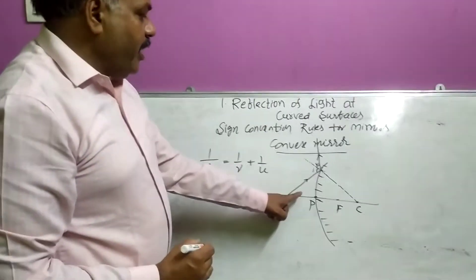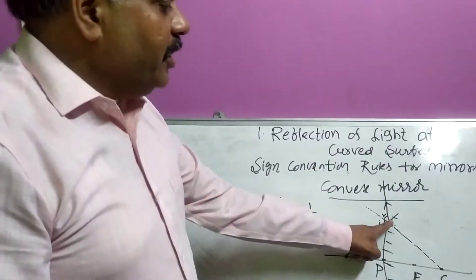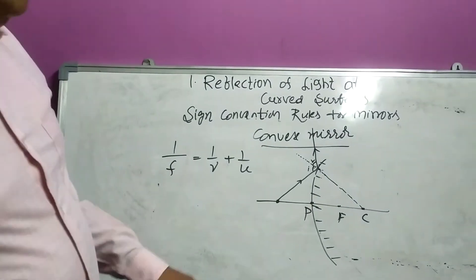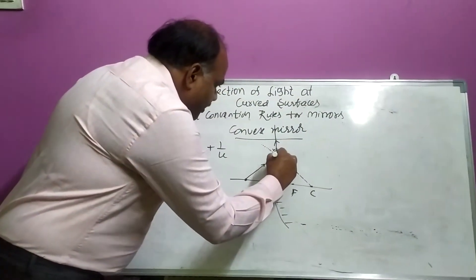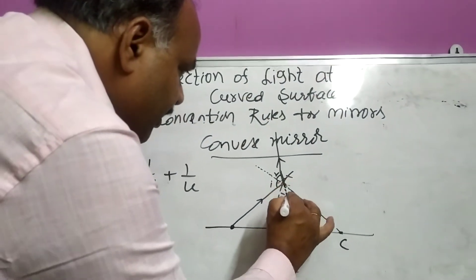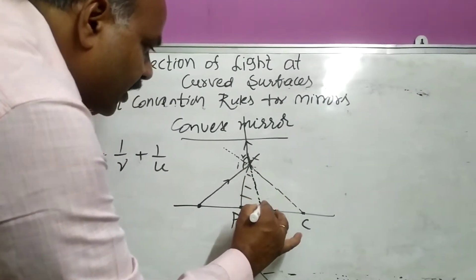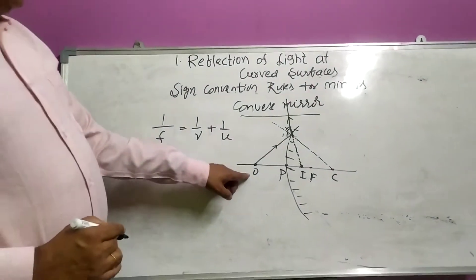So whatever the angle makes this ray, same angle will be made by this ray after reflection. So you extend this ray, extend this ray up to here, then it will be image. Dear students, this is object, this is image.